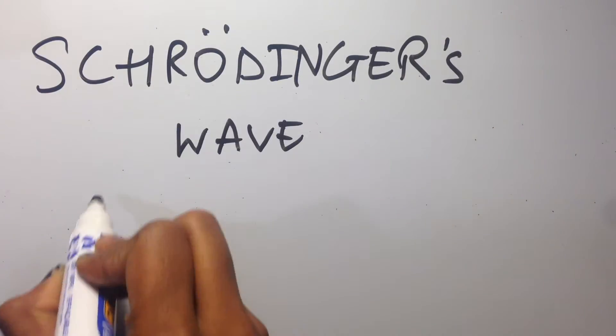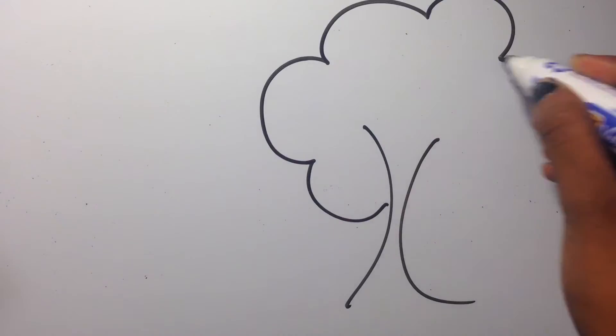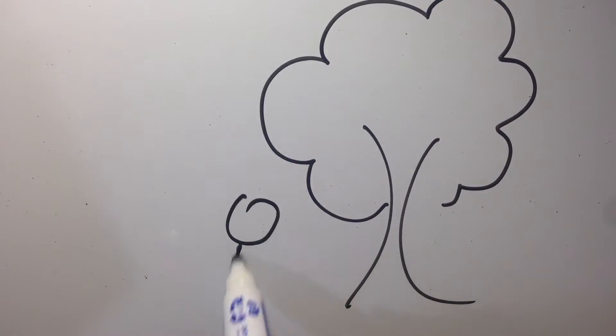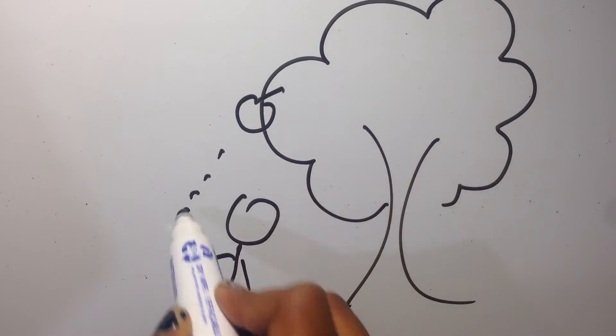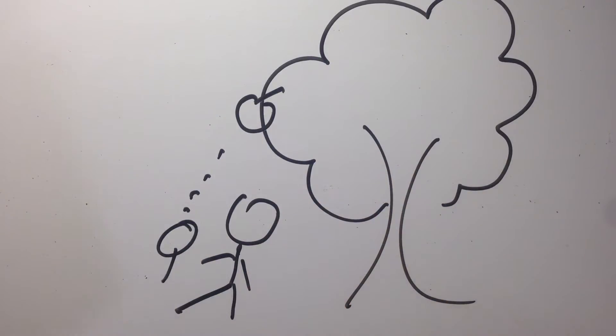In today's video we are going to talk about Schrödinger's wave equation. The Schrödinger wave equation is like Newton's law in classical mechanics. Newton's law described the behavior of a dynamic system and in the same way Schrödinger's equation described the behavior of quantum mechanics.